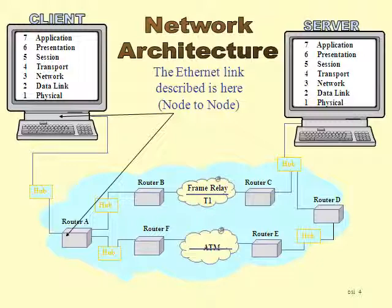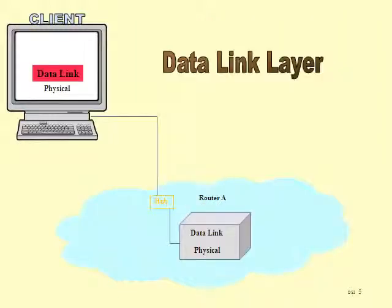What we're going to talk about specifically, just to describe Ethernet, is the link between the client and router A. So how do you get data from the client to router A? The other links are AB, BC going over route 1, or AF, FE, or ED going over route 2.